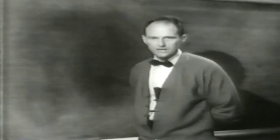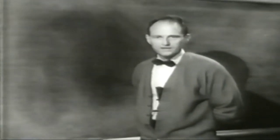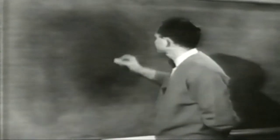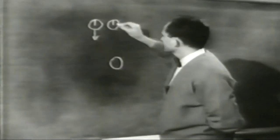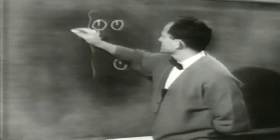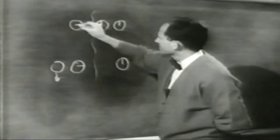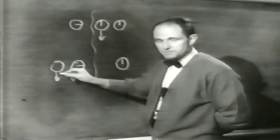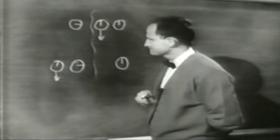Abbiamo usato particelle radioattive, i mesoni mu, per mostrarvi che gli orologi in moto ritardano. Ma non voglio che facciate l'errore di pensare che ciò abbia a che fare col particolare tipo di orologio da noi usato. Esperimenti analoghi sono stati fatti con altri orologi, come gli atomi, e i risultati sono sempre gli stessi. In effetti, se riuscissimo a farle viaggiare velocemente, crediamo che si potrebbe fare lo stesso esperimento con delle sveglie. Se una sveglia in moto passasse vicino alla prima di due sveglie fisse quando tutte e tre segnano esattamente mezzogiorno, e poi 15 minuti dopo passasse accanto alla seconda sveglia fissa, quella sveglia in moto, muovendosi con la stessa velocità dei nostri mesoni, segnerebbe solo un nono di 15 minuti, cioè un minuto e 20 secondi dopo le 12.